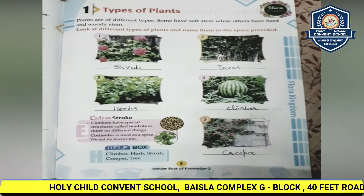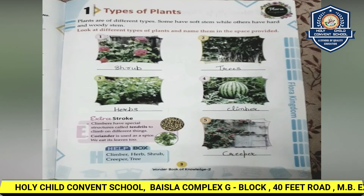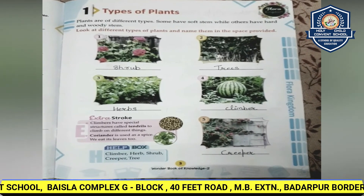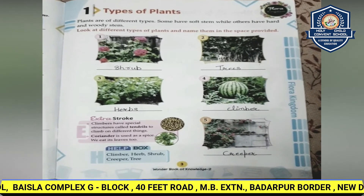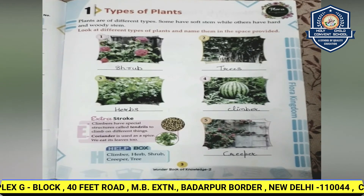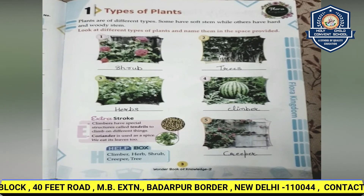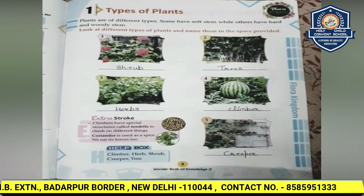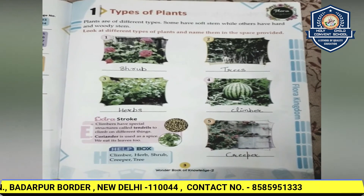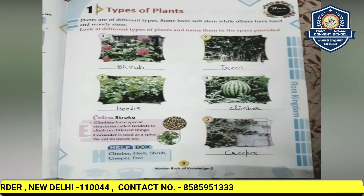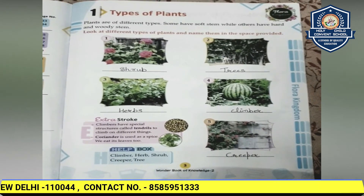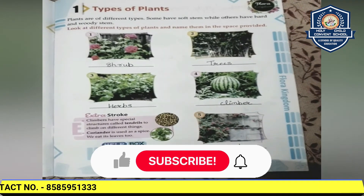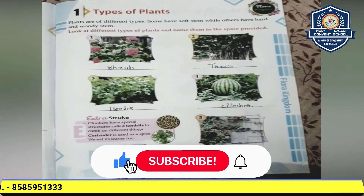Climbers are basically weak-stemmed plants that derive support from climbing up trees and other tall objects. Many of them are vines whose stems twin around trees and branches. They use special structures called tendrils to climb on trees. Examples are pea plants and money plants.